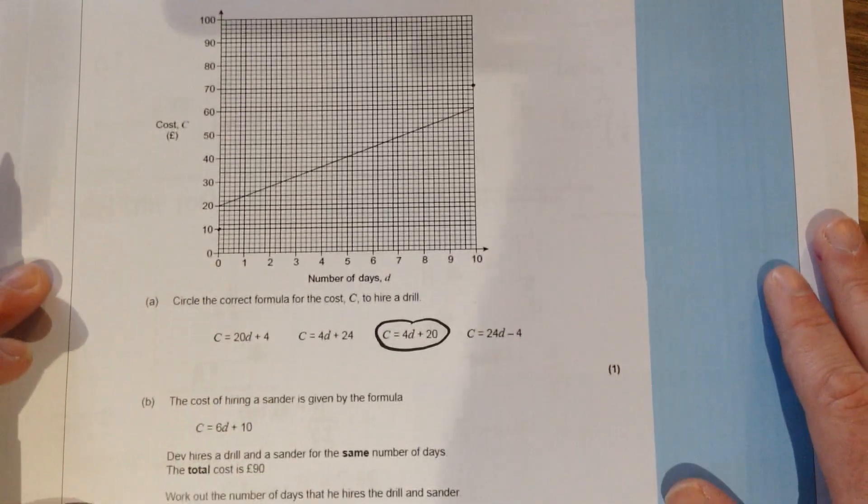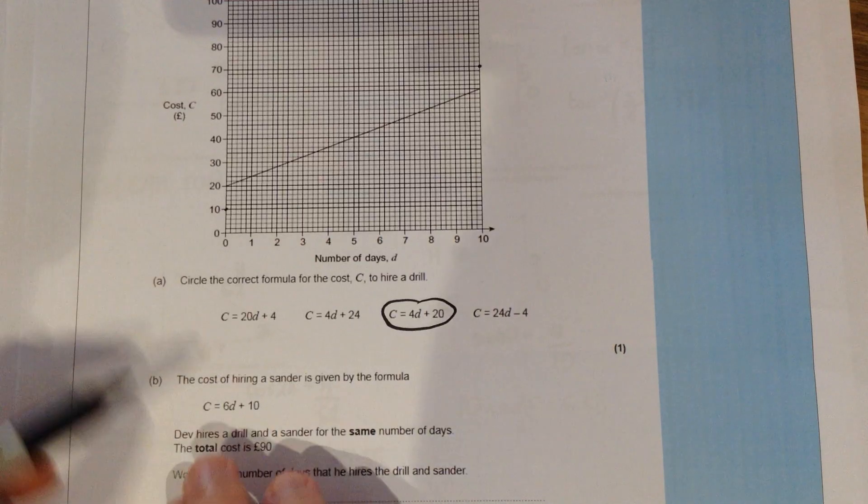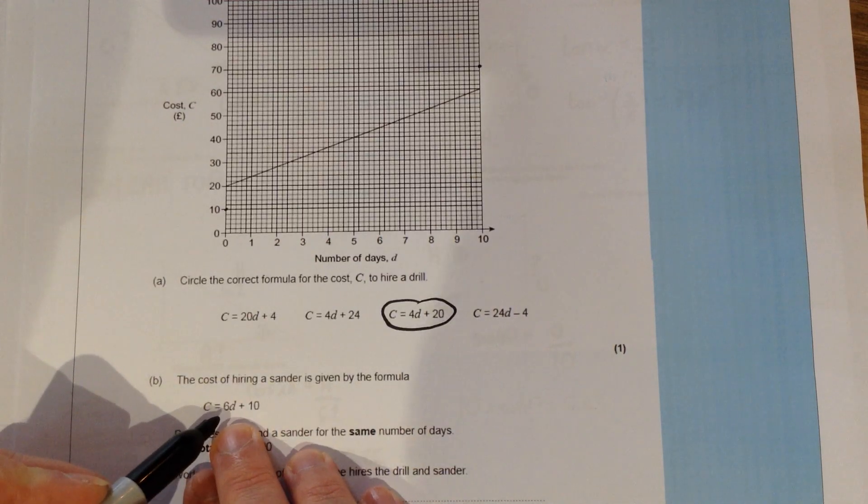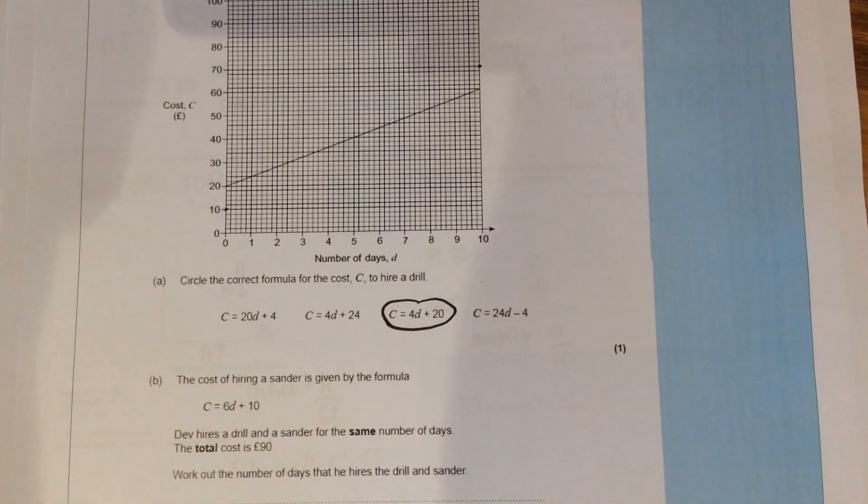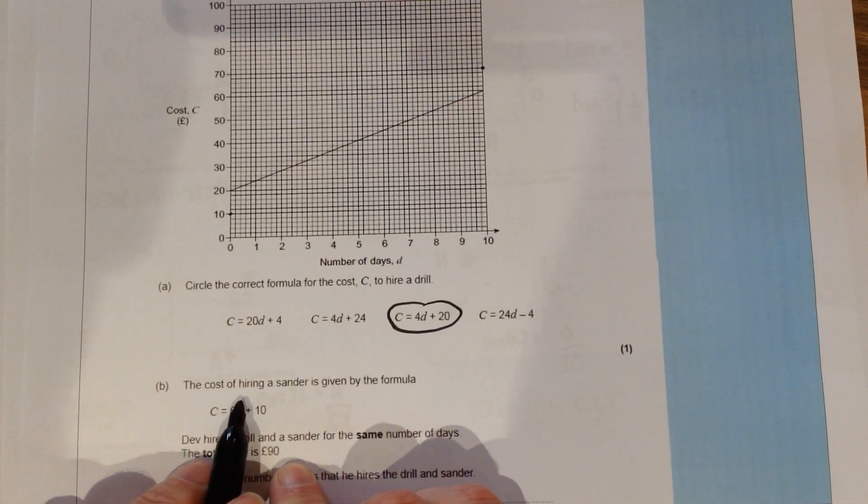The next part of the question is using a different formula. So this time this is for a sander. We've got that C is equal to 6D plus 10. Well straight away I know that if D is zero here, that would make that disappear. So it would leave that C equals 10.